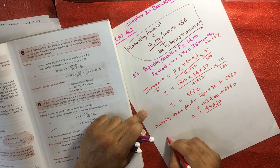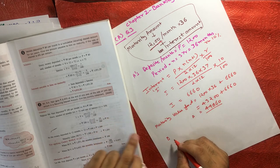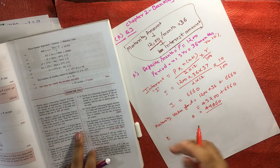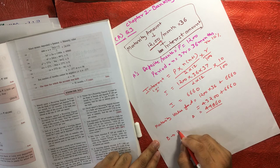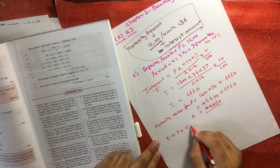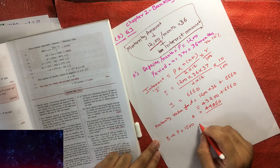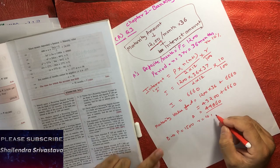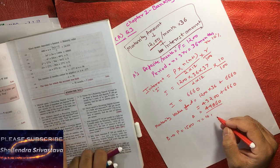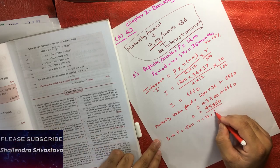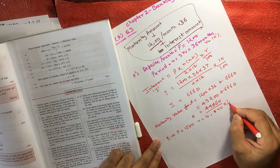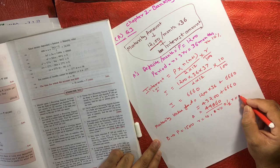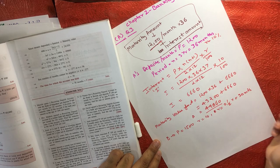Now let's solve the same for B. For B, the deposit per month P = 1500 rupees. The rate of interest r is again 10 percent. The duration n is two and a half years, which equals 30 months.